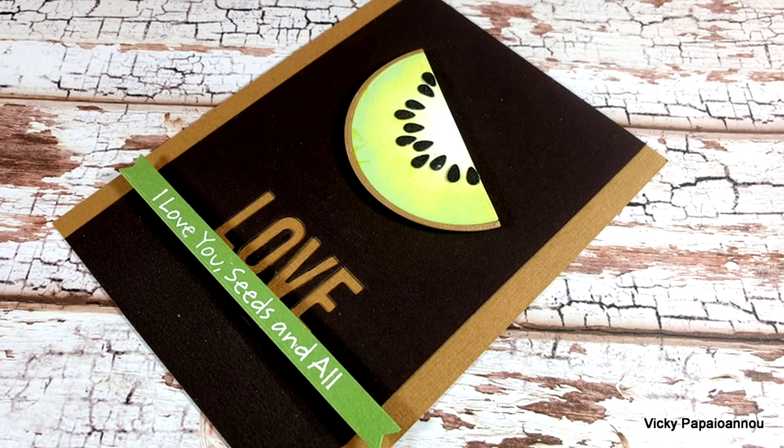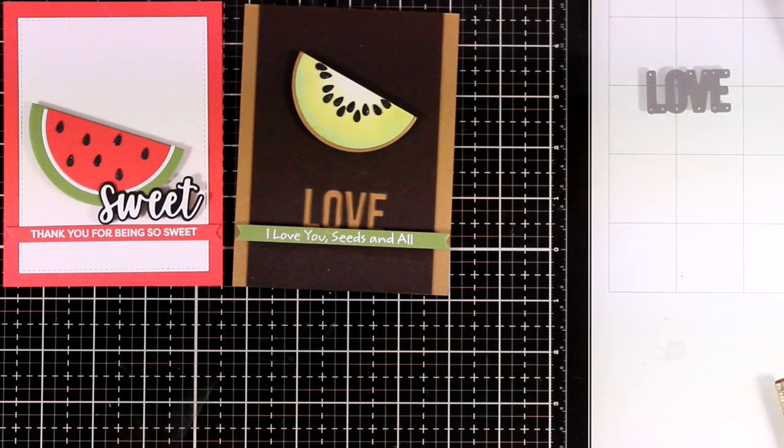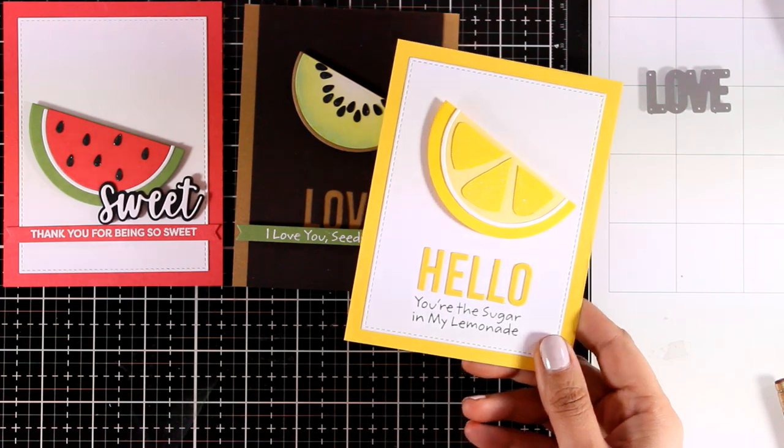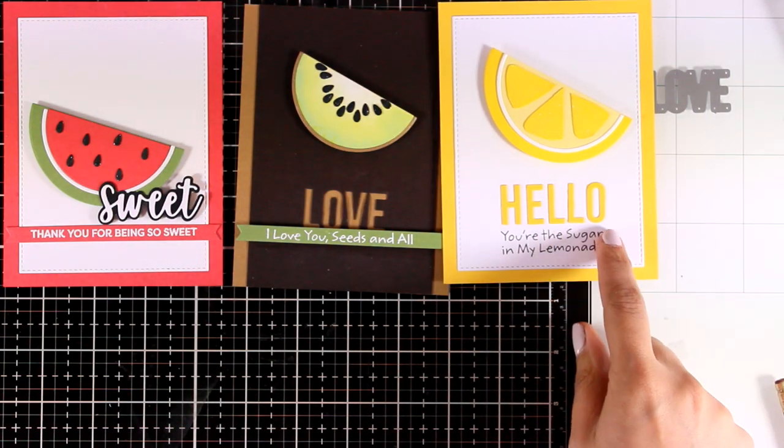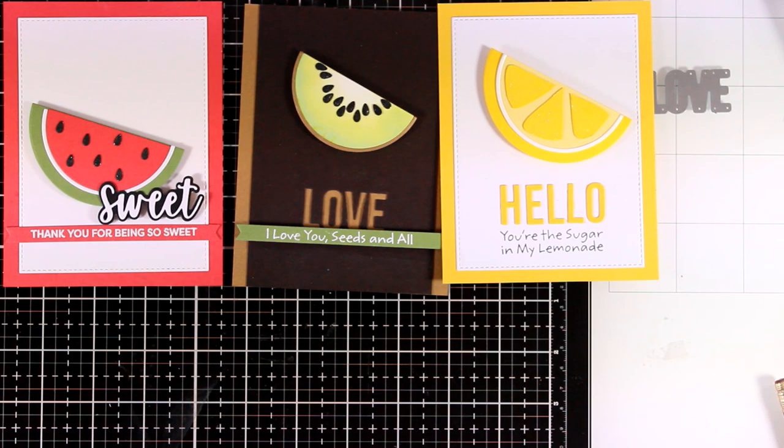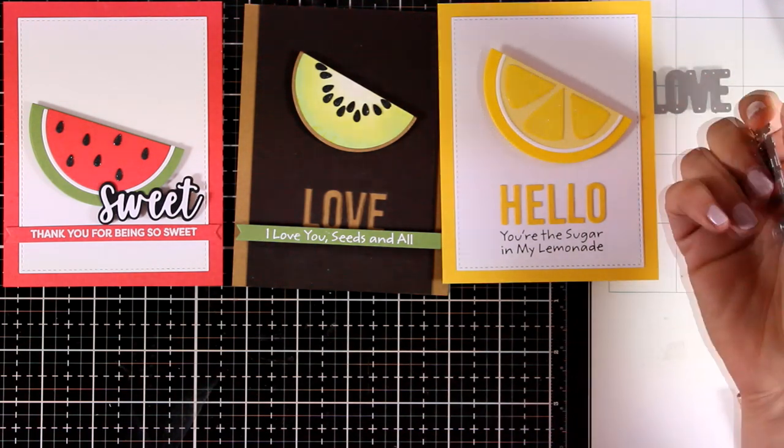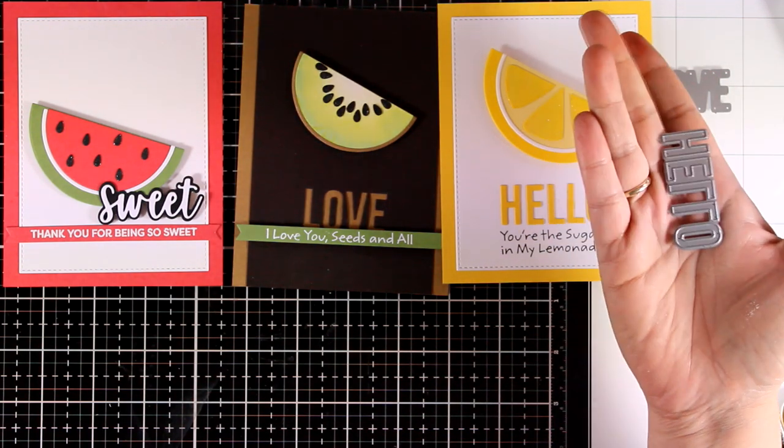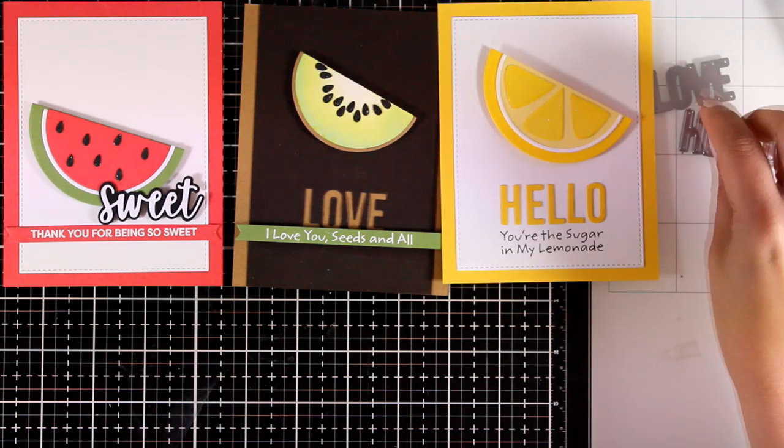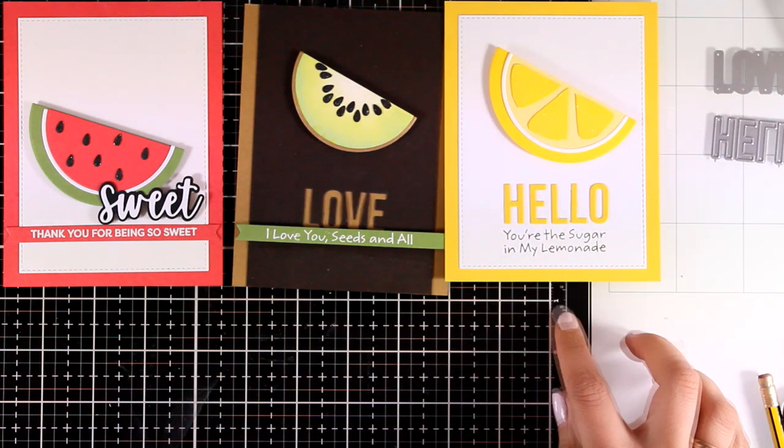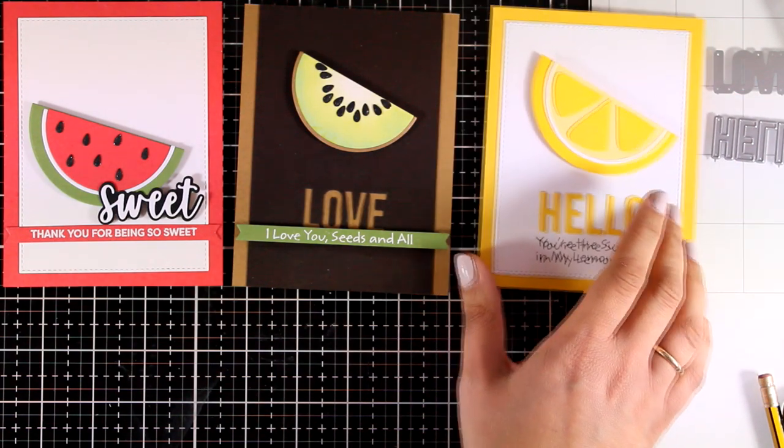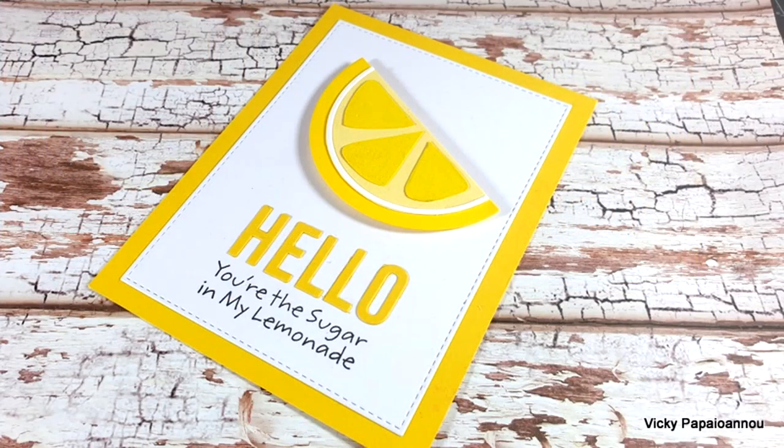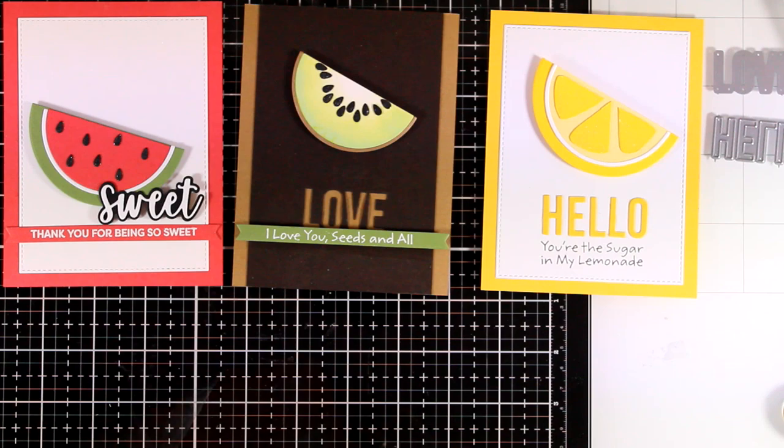Let's move on to the lemon card. Again, the same layout but different sentiments. The backing is yellow cardstock and I die cut the word 'hello' using this die from a previous MFT release. To complete my sentiment, I also stamped underneath 'you are the sugar in my lemonade'—this stamp comes from the Sweet Lemonade stamp set.